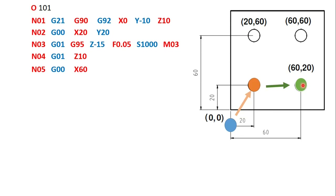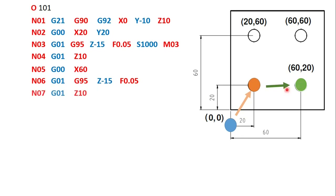At the second hole (X60, Y20), we again perform G01 linear interpolation with G95 feed rate 0.05, S1000, M03, drilling to Z minus 15. After drilling, the tool comes back up to Z10. The same sequence — rapid move, drill to Z minus 15, retract to Z10 — is repeated for each of the remaining hole locations.